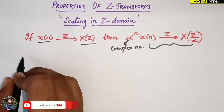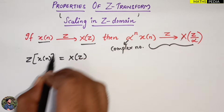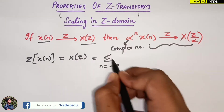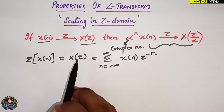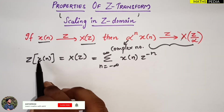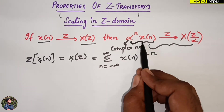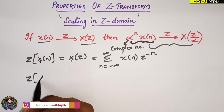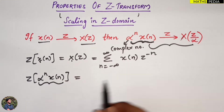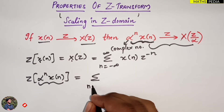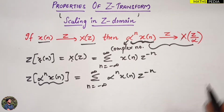Let us go for the proof. By definition, the Z-transform of x(n) is X(z), which equals the summation from n = -infinity to infinity of x(n) times z^(-n). This is the standard formula for X(z). Now I have to find the Z-transform of alpha^n times x(n), so I bring that term into the summation: summation from n = -infinity to infinity of alpha^n times x(n) times z^(-n).